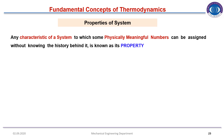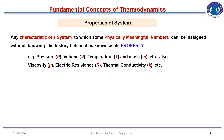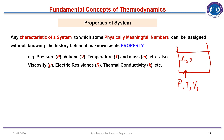Properties of system: any characteristic of a system to which a physically meaningful number can be assigned without knowing its history is known as a property. Examples include pressure, volume, temperature, mass, viscosity, electric resistance, and thermal conductivity. For any system such as water, you can measure pressure, temperature, volume, viscosity, and mass at any point using instruments.